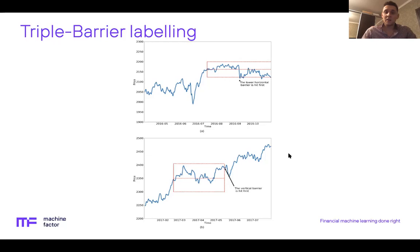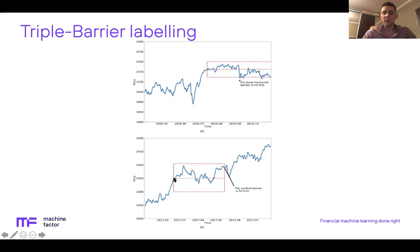Let's look at two small examples. In the first, for a given sample with fixed profit and stop loss horizontal barriers set, the lower horizontal barrier was hit first, so the label value is minus one, corresponding to a negative trend. In the second example, none of the horizontal barriers was hit, so the vertical barrier was hit, corresponding to the maximum time in position. In this case, we use the difference between the price at label start and the price when the label was triggered, giving a label value of one.